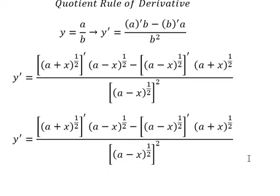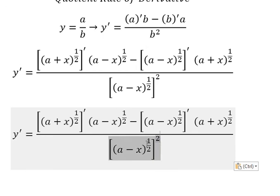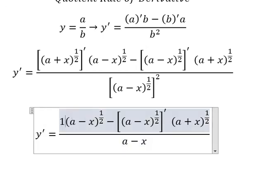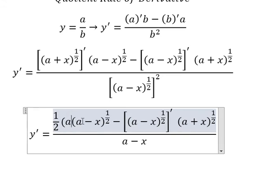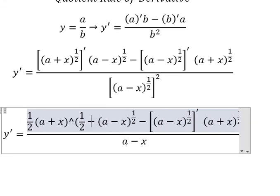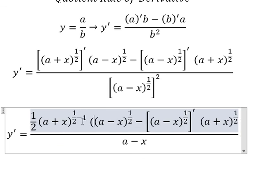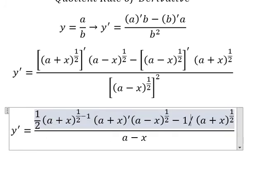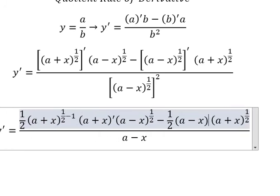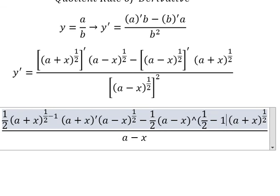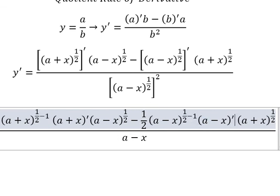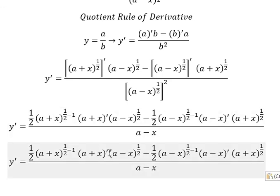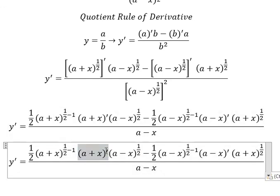Now we need to simplify: 1 over 2 multiplied by number 2. You get about a minus x. We have 1 over 2, a plus x to the power of 1 over 2 minus 1. Like that, we do first derivative of a plus x. Now we do first derivative of x, and similarly for this one.